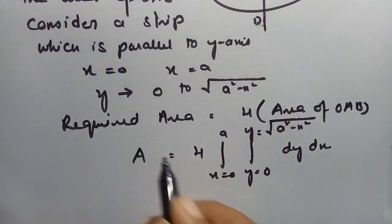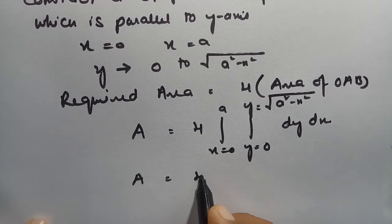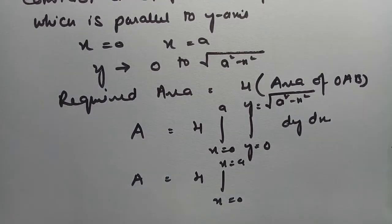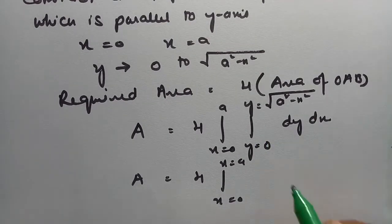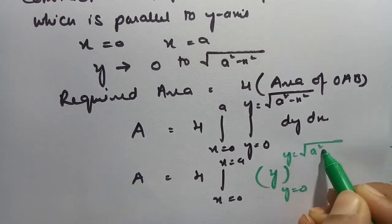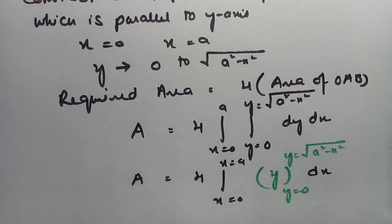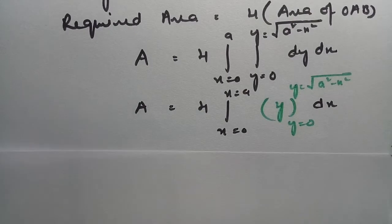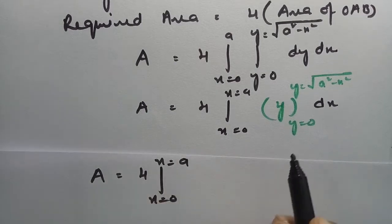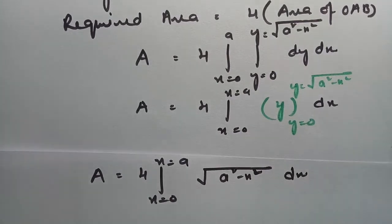The area is 4 times the double integral from x = 0 to a and y = 0 to √(a² − x²) of dy dx. First, integrating with respect to y: the integral of dy is simply y, evaluated between y = 0 and y = √(a² − x²). Substituting the upper limit gives √(a² − x²), so the area becomes 4 times the integral from 0 to a of √(a² − x²) dx.